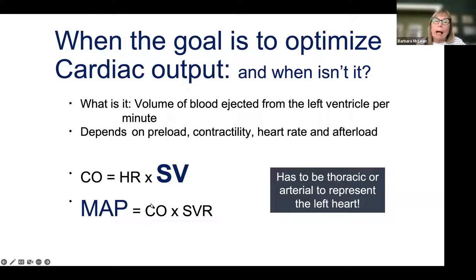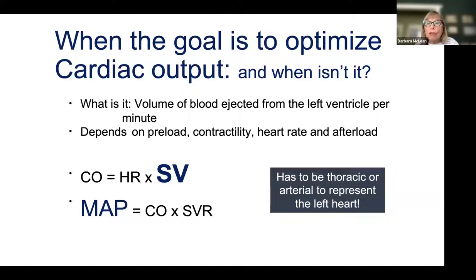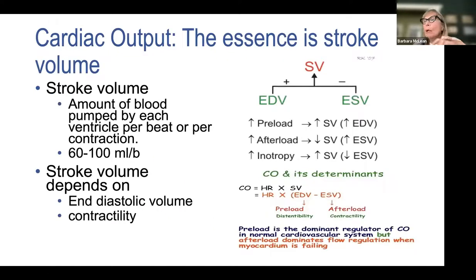Mean arterial pressure equals cardiac output (heart rate × stroke volume) times vascular resistance. As vascular resistance goes up, MAP may stay the same or rise, but cardiac output will go down. As you aggressively titrate vasopressors to maintain blood pressure, you may limit cardiac output. If you have an arterial line — or if you don't, find another way — evaluate and optimize cardiac output so treating pressure doesn't limit flow.